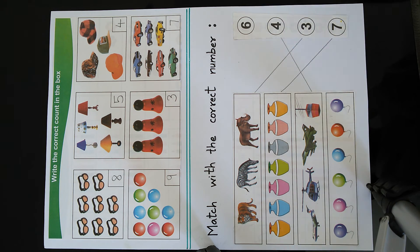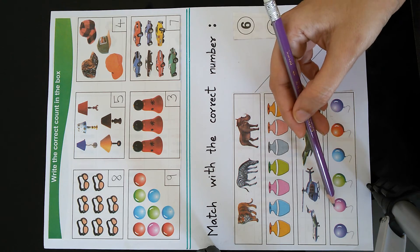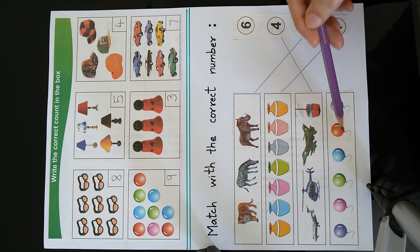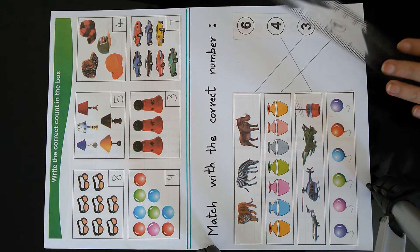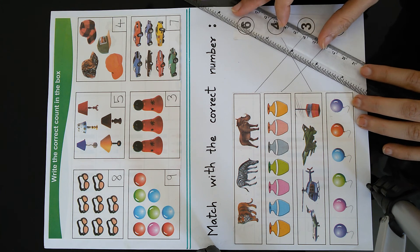The next picture shows balloons. 1, 2, 3, 4, 5, 6. So there are 6 balloons in the picture.